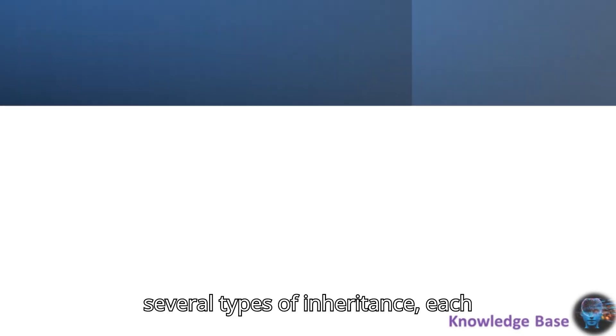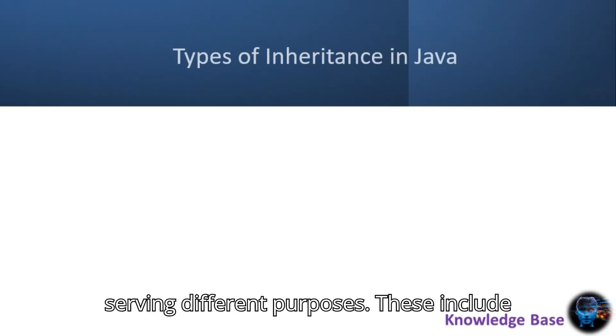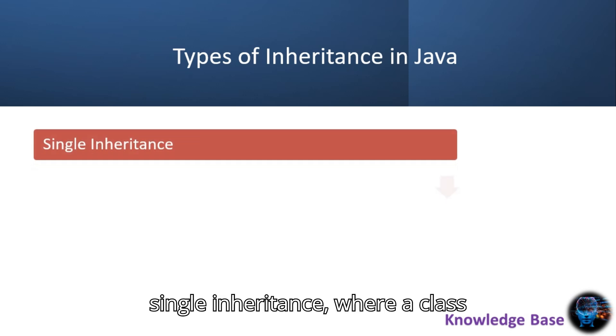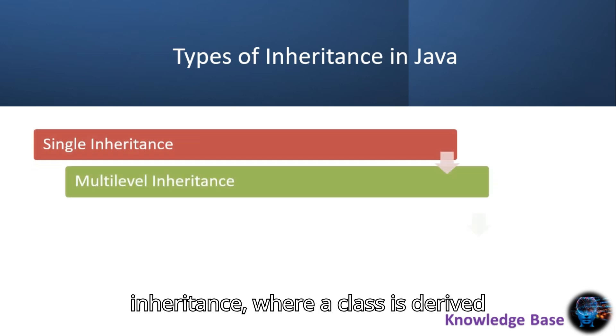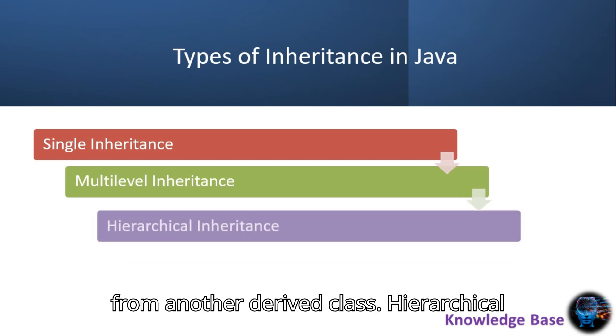Java supports several types of inheritance, each serving different purposes. These include single inheritance, where a class inherits from one superclass, and multilevel inheritance, where a class is derived from another derived class.